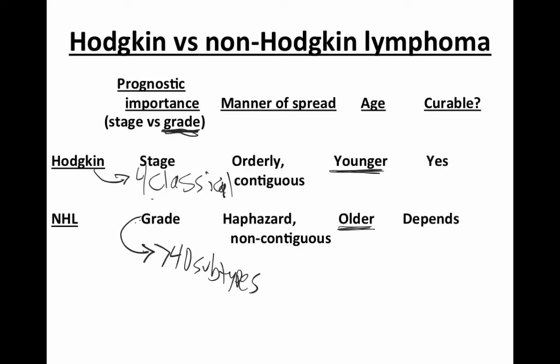All patients with Hodgkin lymphoma, regardless of their stage or age, are curable. For non-Hodgkin lymphoma, it depends. For the more aggressive non-Hodgkin lymphomas, they're all curable regardless of stage. For the less aggressive ones, they're not as curable.